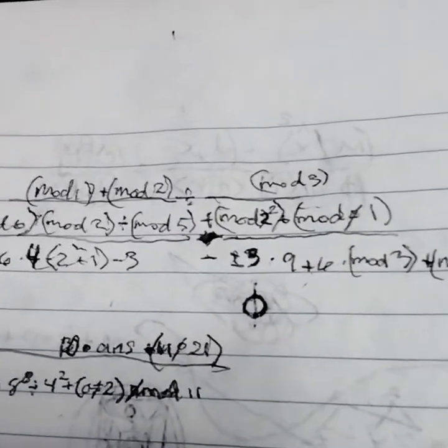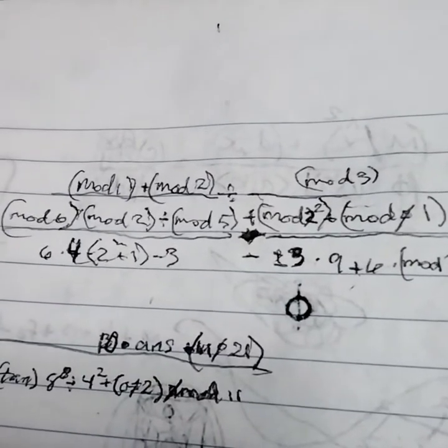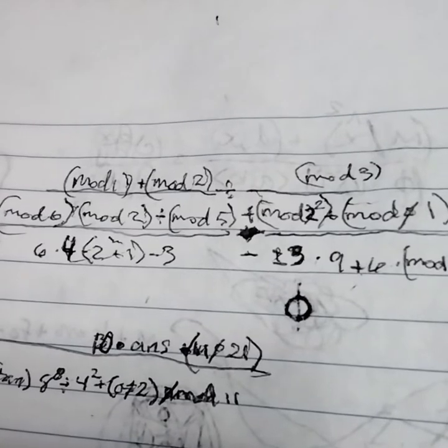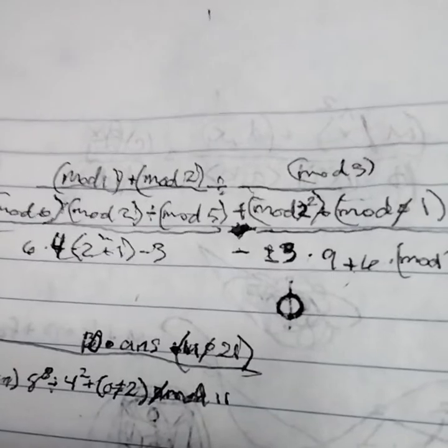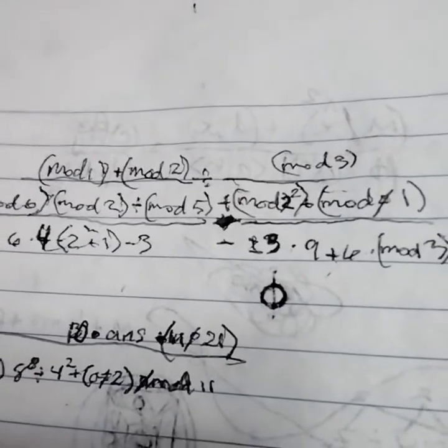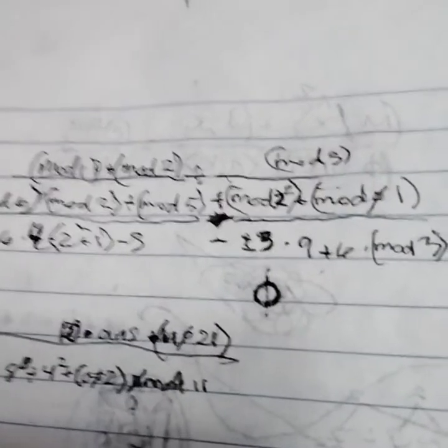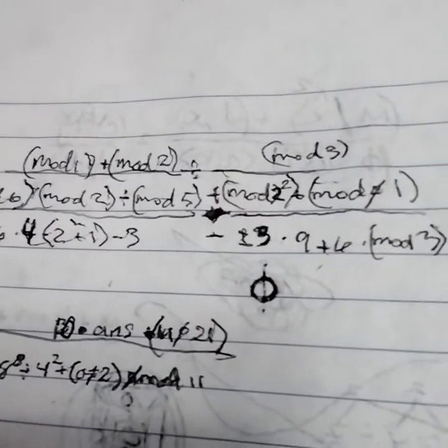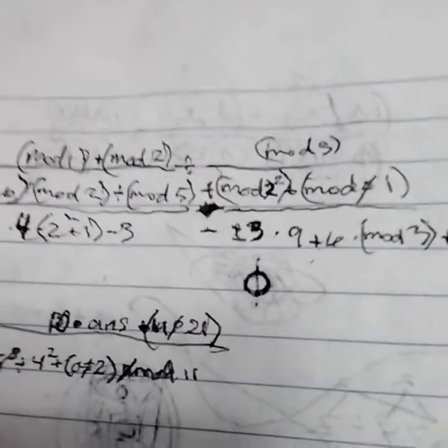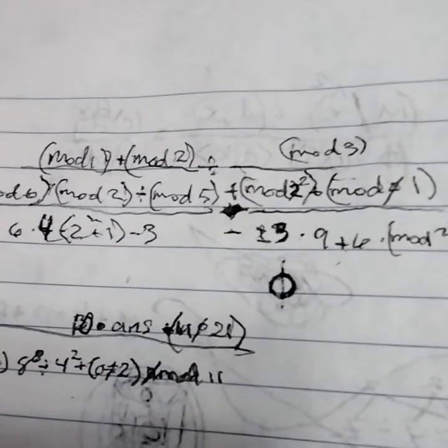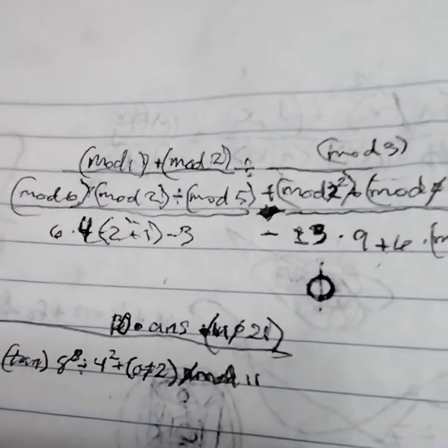So to make mod 3 into a positive, I go down to the bottom and do mod 6, mod 2, mod 5, plus mod 2 squared, plus mod 0'd out, which if I can explain it, it's just a mod without a 0. So it goes 1 and negative 1, so it goes 1, and then that's 1, and I started to divide it by 6 times 4.